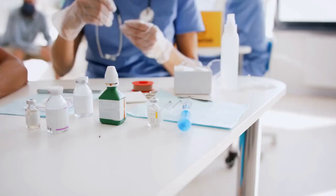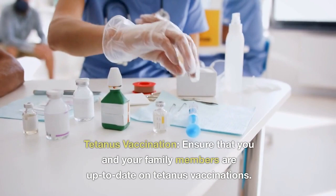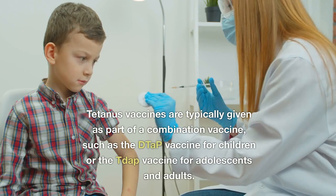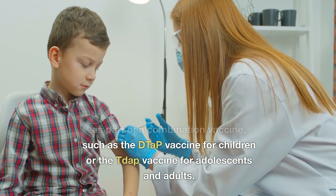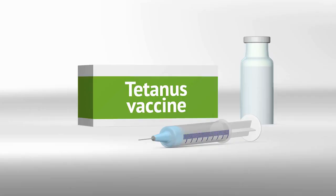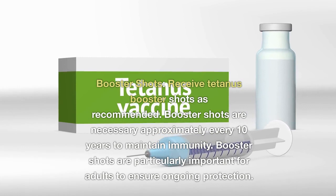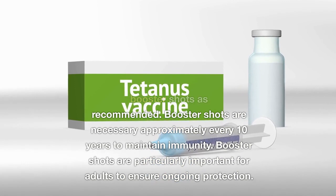How to prevent tetanus. Tetanus vaccination: Ensure that you and your family members are up to date on tetanus vaccinations. Tetanus vaccines are typically given as part of a combination vaccine, such as the DTaP vaccine for children or the Tdap vaccine for adolescents and adults. Booster shots: Receive tetanus booster shots as recommended — approximately every 10 years to maintain immunity. Booster shots are particularly important for adults to ensure ongoing protection.